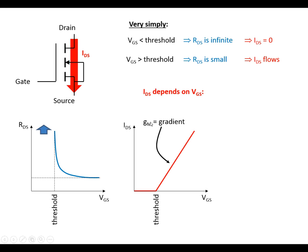We've got the gradient of this, which gives the symbol GM, which is the transconductance, is the term that's used, the transconductance of the MOSFET.